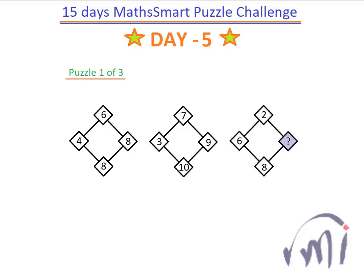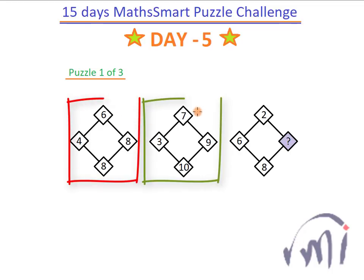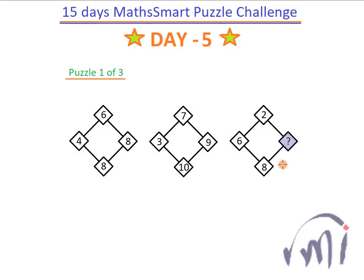This was the first puzzle for Day 5 of the 15 Days of MathSmart Puzzle Challenge. Here we are given two figures with the same relation, and we have to identify the relation and then fill this diamond-shaped box with the same logic.